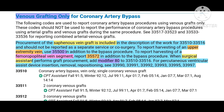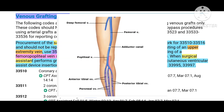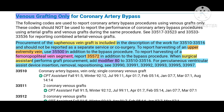The next guideline states that if a femoropopliteal vein segment is taken for CABG procedures, you have to report 35572 in addition to the bypass procedure code. Also, if a surgical assistant is performing this graft procurement, you have to add modifier AT with all these codes to indicate that the grafting was done by the surgical assistant. These are the guidelines for venous-only grafts.